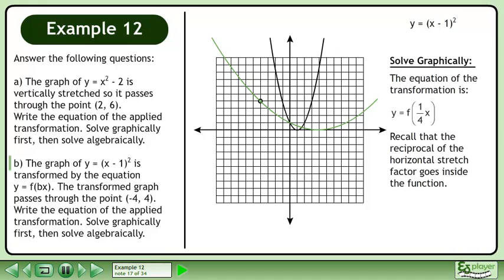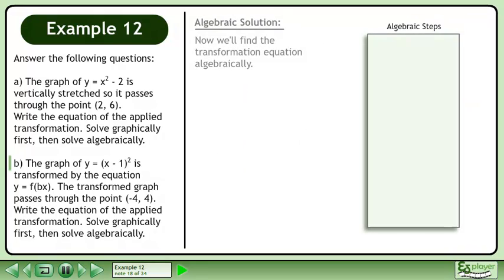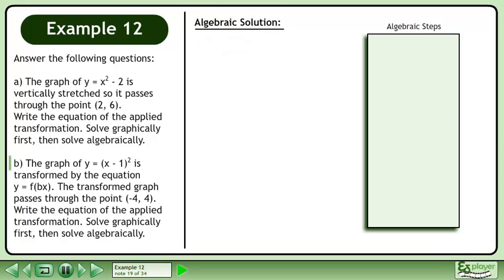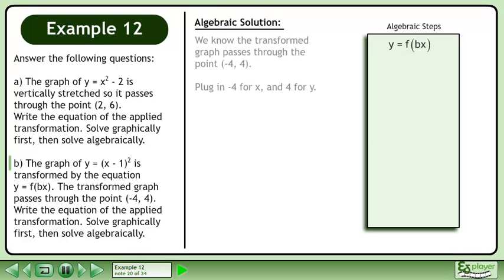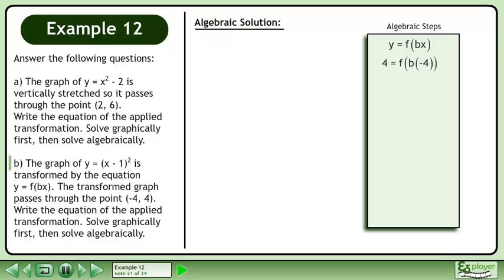Recall that the reciprocal of the horizontal stretch factor goes inside the function. Now we'll find the transformation equation algebraically. A horizontal stretch is represented by y equals f(bx). We know the transformed graph passes through the point. Plug in negative 4 for x and 4 for y. Simplify this so it reads f(negative 4b).